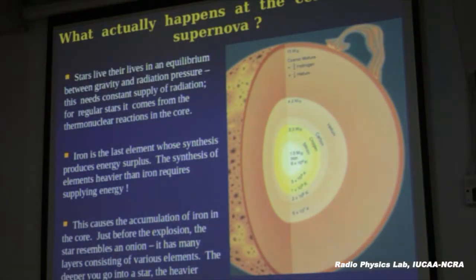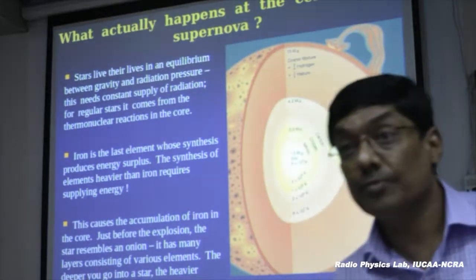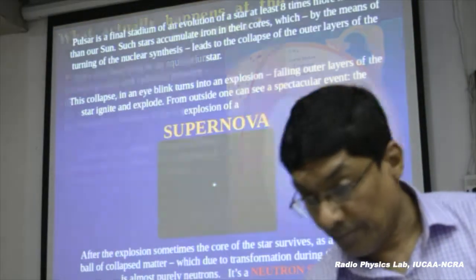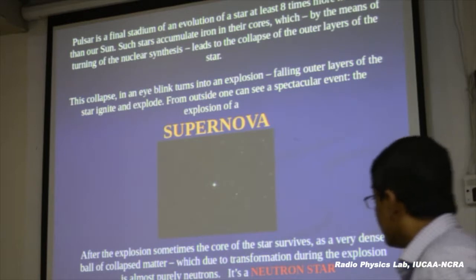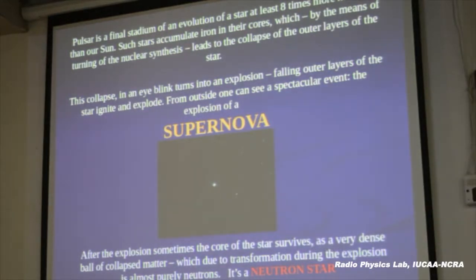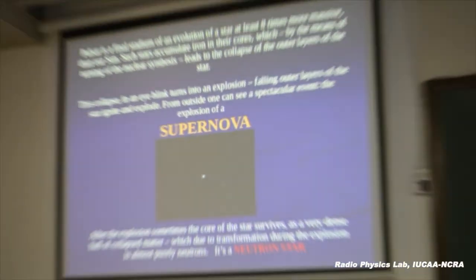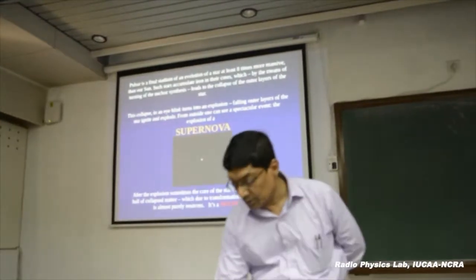When there is an iron core, you cannot produce further energy. The pressure and density rise as it starts to collapse under gravity. At that point, the material is squeezed into the form of nuclei, and even free protons and electrons combine to form neutrons. You get all the matter converted to neutrons, and then neutron degeneracy pressure balances the force of gravity, and the star exists in equilibrium.